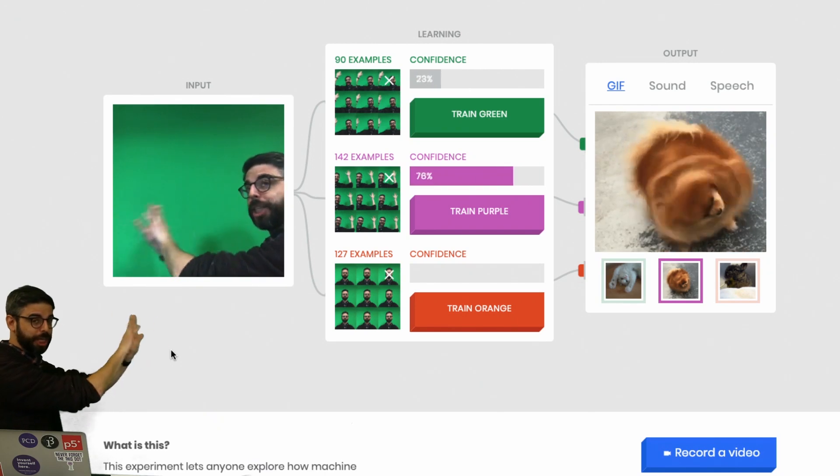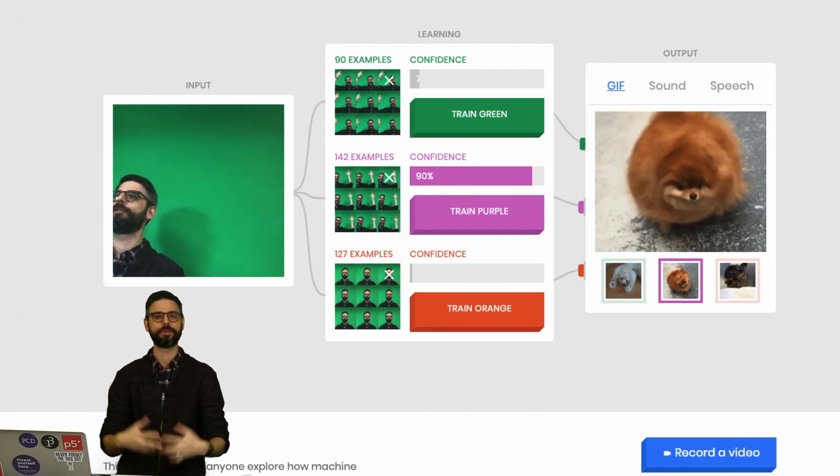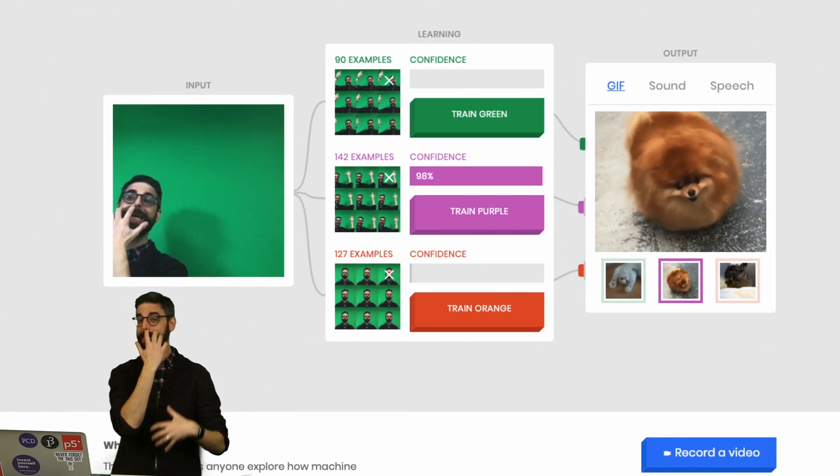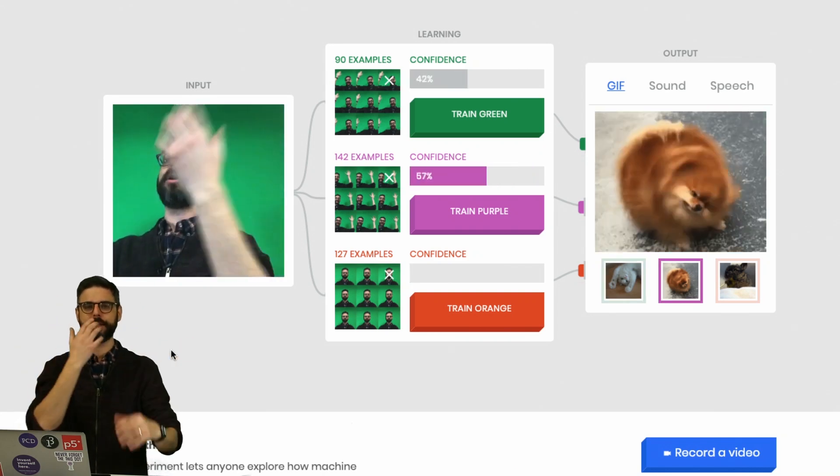This is the teachable machine project from Google Creative Lab, demonstrating this idea of transfer learning, taking a pre-trained model and using it as a foundation to train a new model on top of.